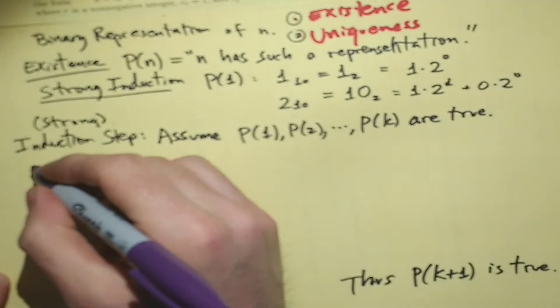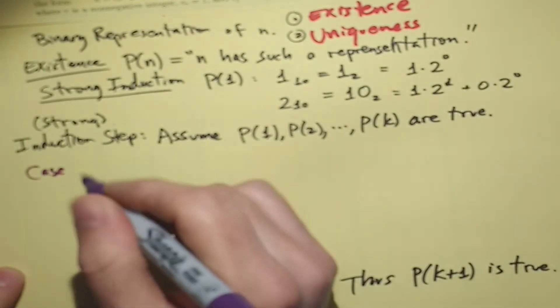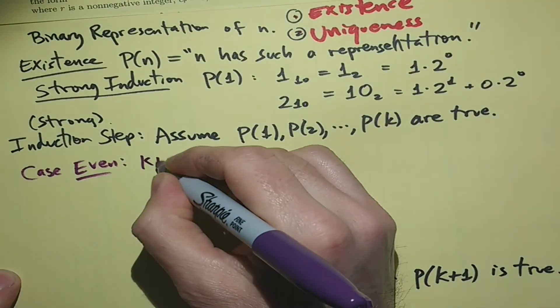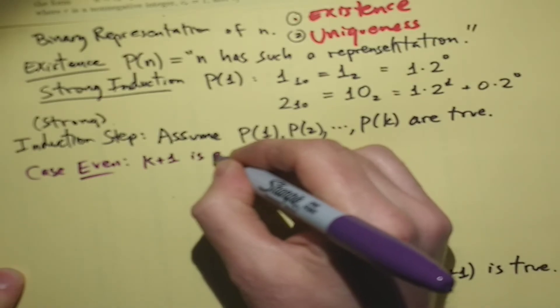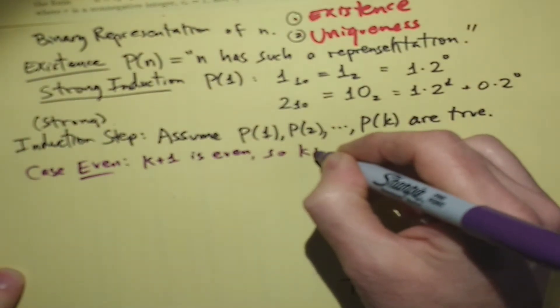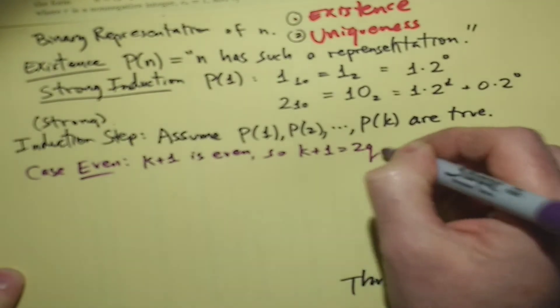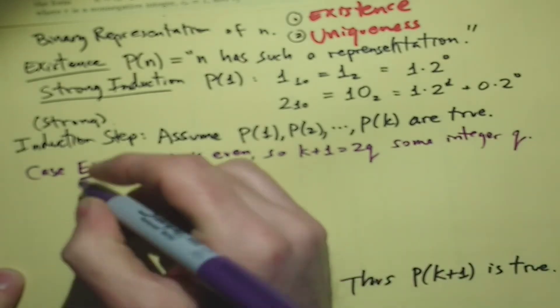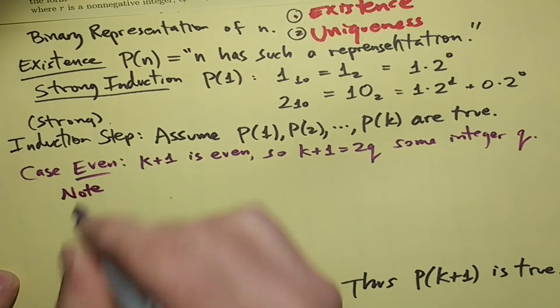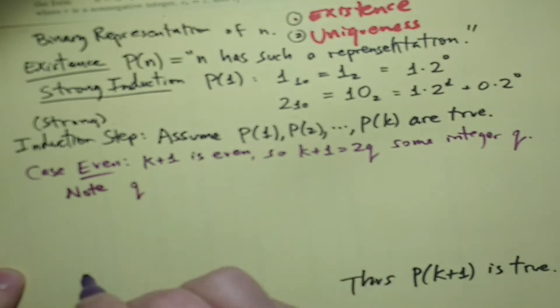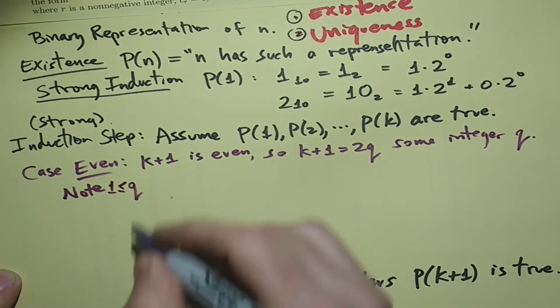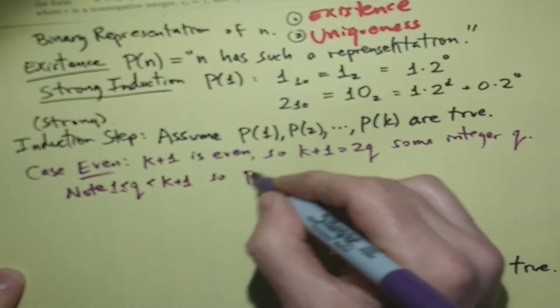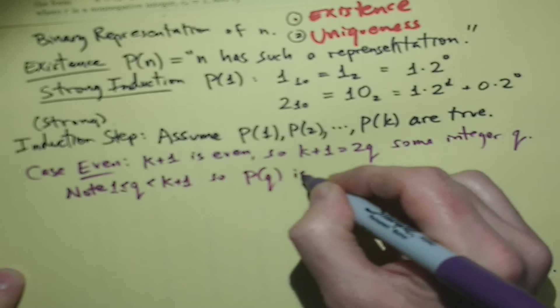And I'm going to write this in two cases. Let's call them case even. And the other will be case odd. k+1 is even. So k+1 is 2 times q and that's some integer q. And I'd like to note that q is at least 1 and it's less than k+1, so P(q) is true.